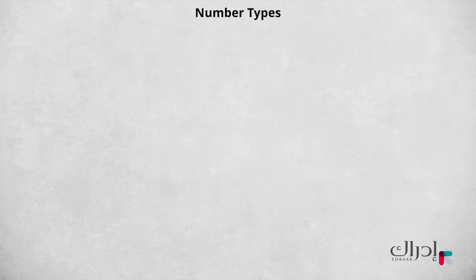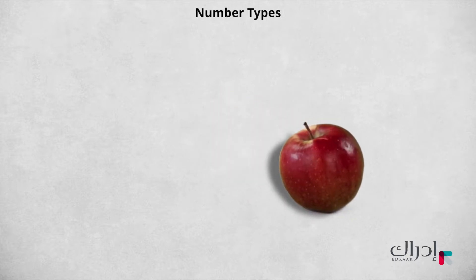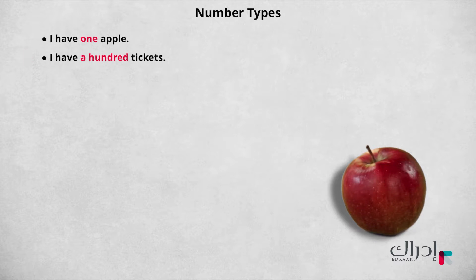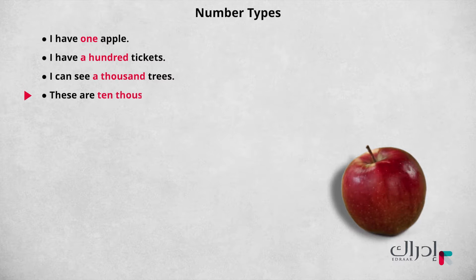Look at these examples. I have one apple. I have a hundred tickets. I can see a thousand trees. There are ten thousand cars on the road.